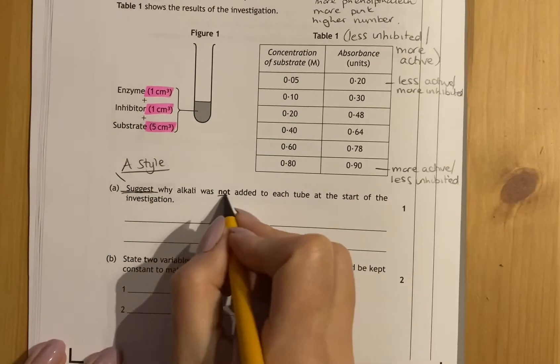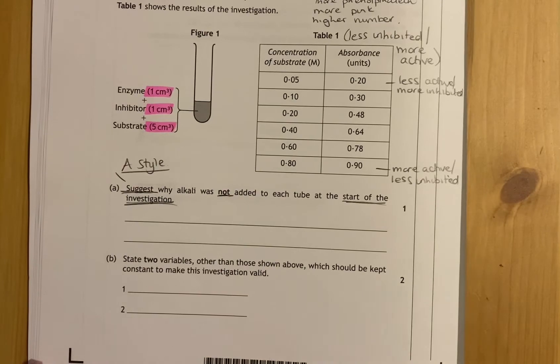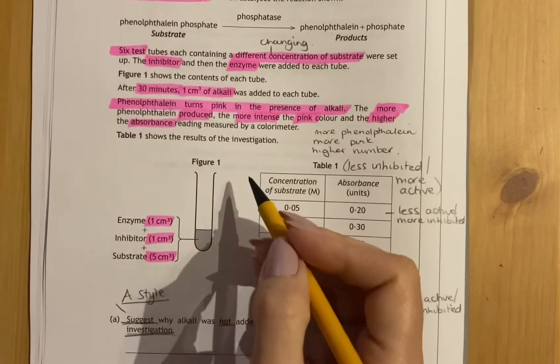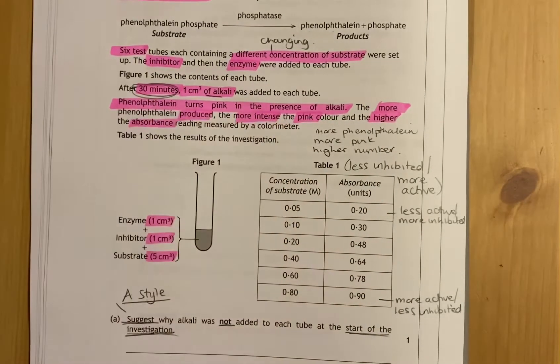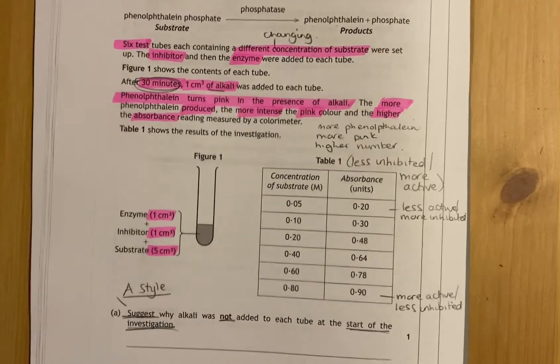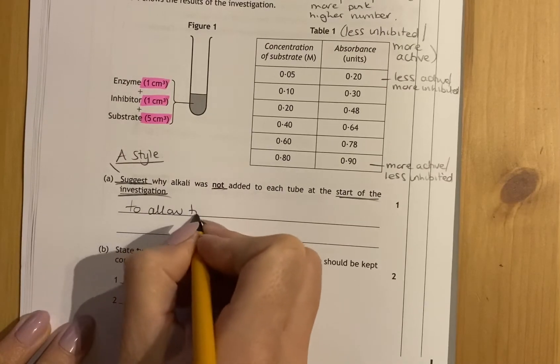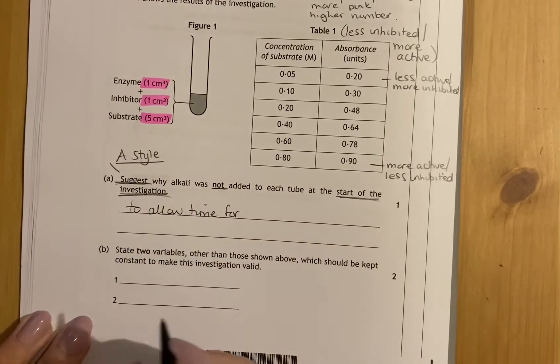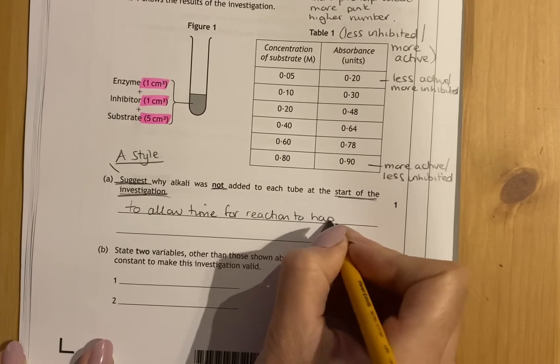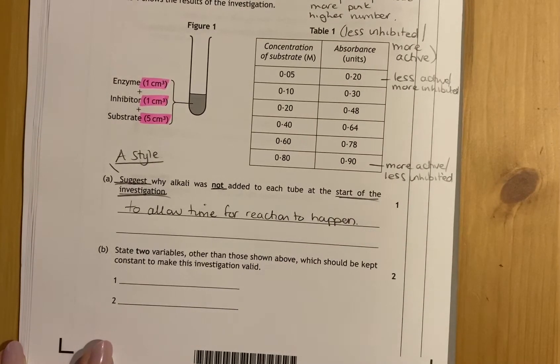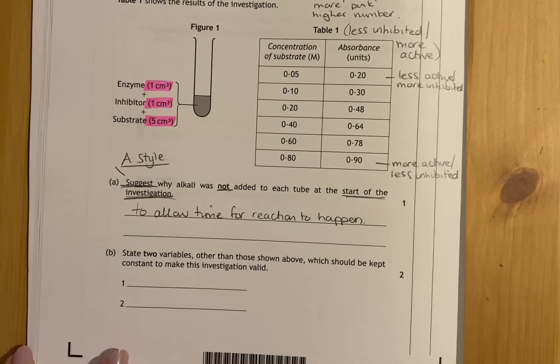It's asking me to suggest why the alkali was not added to each test tube at the start of the investigation. You have to look at where the alkali was added. It's stating after 30 minutes the alkali was added, so that's giving them some time to do something. Your answer should say to allow time for the reaction to happen, because the enzyme is reacting and producing products. You're giving it 30 minutes to react before you put in that alkali to get that pink color.